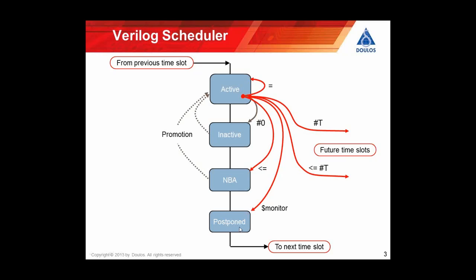Right at the end, you've got this postponed region, which relates to $monitor. $monitor writes out right at the end of the time slot. At the top it says 'from previous time slot,' and at the bottom it says 'to next time slot.' So that was all in standard Verilog. The main issue in Verilog was making sure you use non-blocking assignments at the right time to avoid any possible race between reading variables.